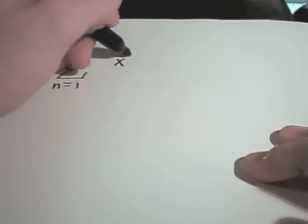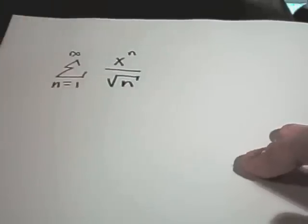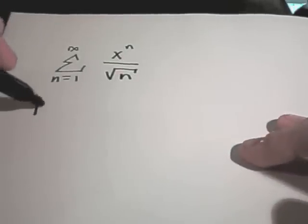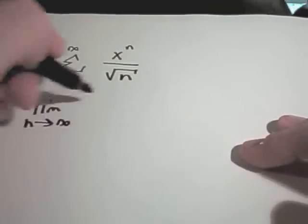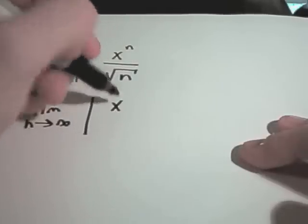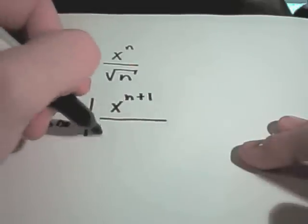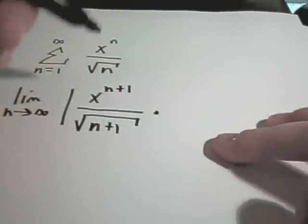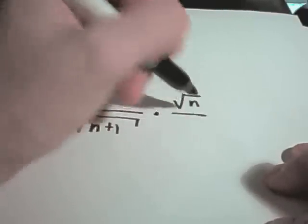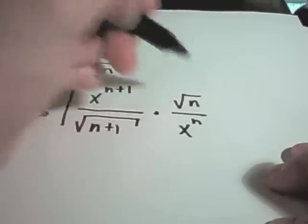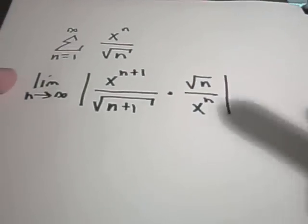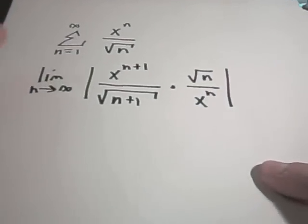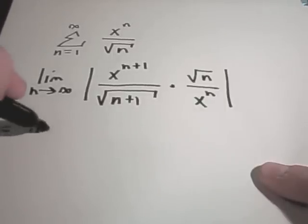Let's find the interval of convergence for the series from n equals 1 to infinity of x to the n over square root of n. We'll use the ratio test on this. The limit as n goes to infinity — everywhere there's an n, we replace it with n plus 1. In the denominator I'll get square root of n plus 1, and I multiply by the reciprocal square root of n over x to the n. Now I'll simplify it down a little bit.